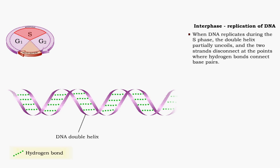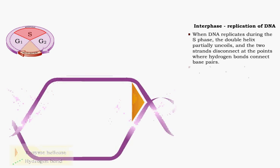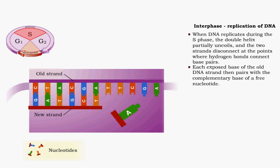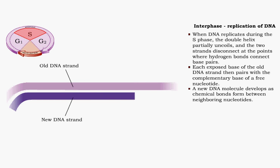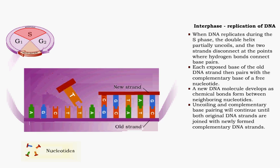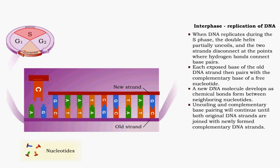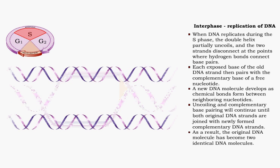When DNA replicates during the S phase of interphase, the double helix partially uncoils and the two strands disconnect at the points where hydrogen bonds connect base pairs. Each exposed base of the old DNA strand then pairs with the complementary base of a free nucleotide. A new DNA molecule develops as chemical bonds form between neighboring nucleotides. The uncoiling and complementary base pairing continues until both original DNA strands are joined with newly formed complementary DNA strands. As a result, the original DNA molecule has become two identical DNA molecules.